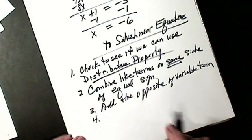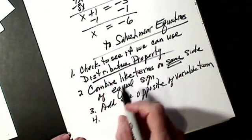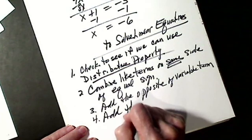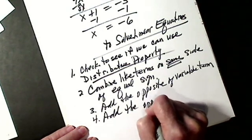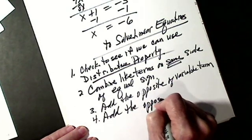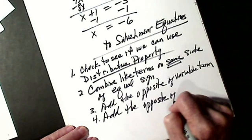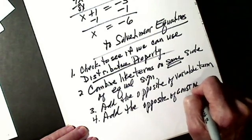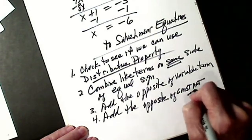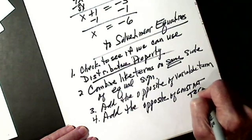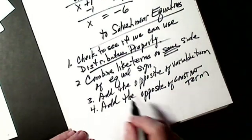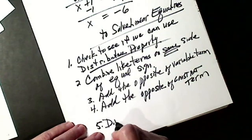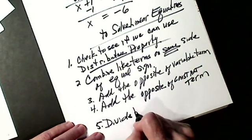Fourth step: we're going to add the opposite of the constant term. Last step: divide by the coefficient of X.